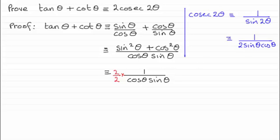So, I'm not changing the value of it. But what I end up with now is 2 on the top. Over 2 cos theta, sine theta. And 2 cos theta, sine theta is the same as sine 2 theta.